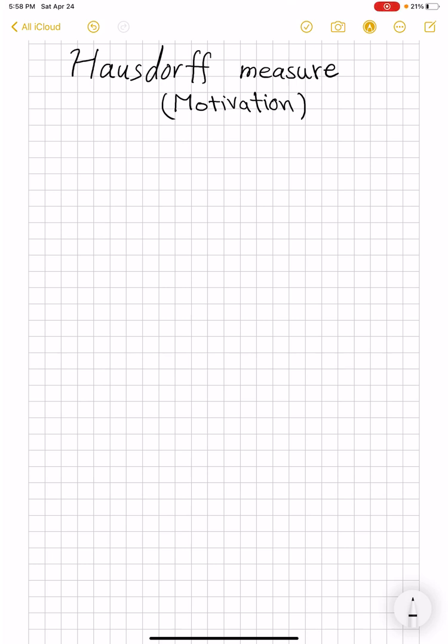Hello, today I want to start discussion of Hausdorff measures by first going over some examples in R^2. Suppose we have a subset of R^2, which with the metric that it inherits is a metric space. And suppose that you have some reasons to believe that your X is a one-dimensional object, whatever that means, and you want to talk about its length.